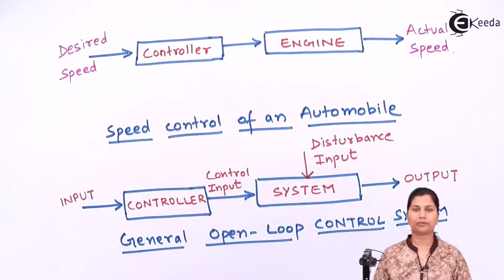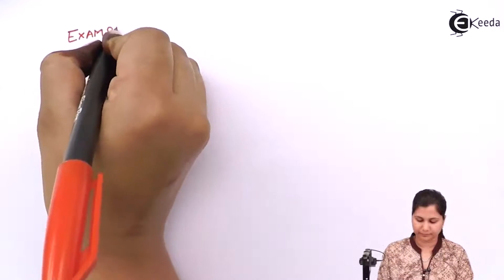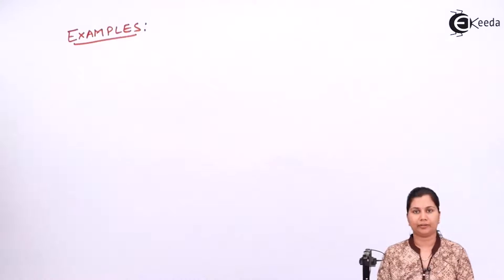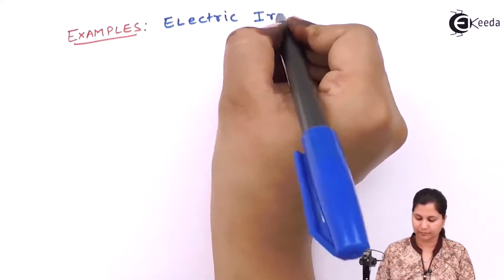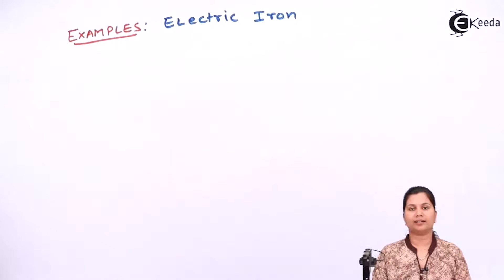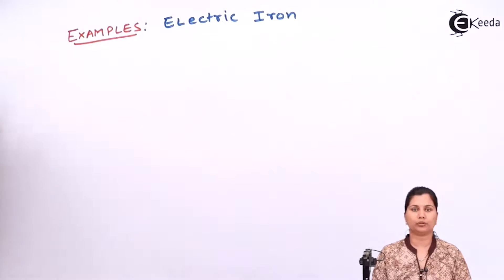Now let's see some examples of open loop control systems from our daily life. The first example is the electric iron which we see in our home. Remember that this is not the automatic electric iron — this is the simple electric iron. The input is the power supply connected to the electric iron, and the output of the electric iron is heat. So it is an open loop control system.